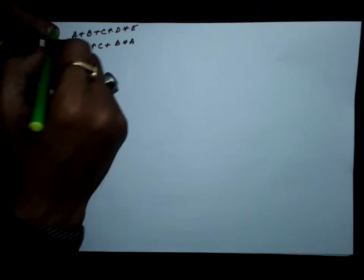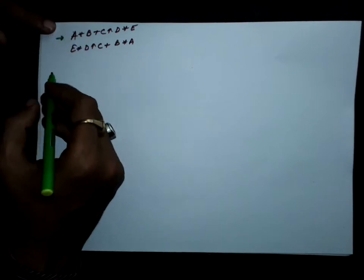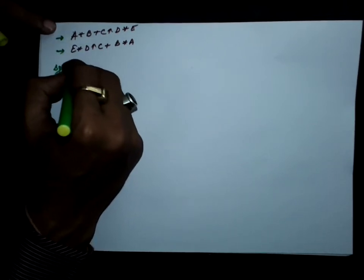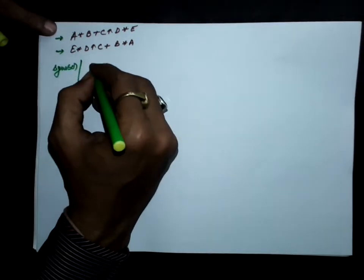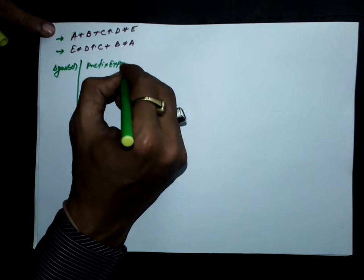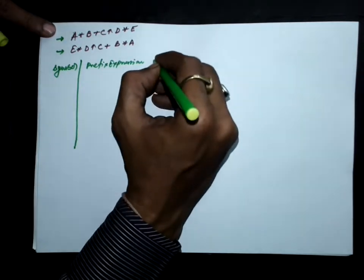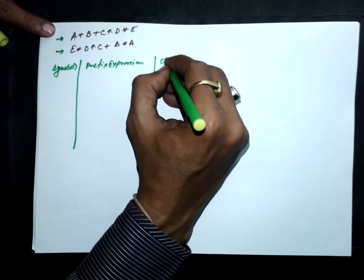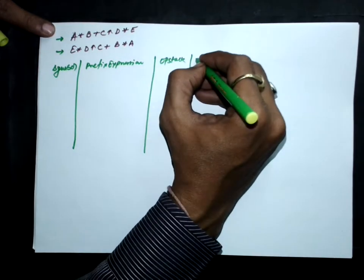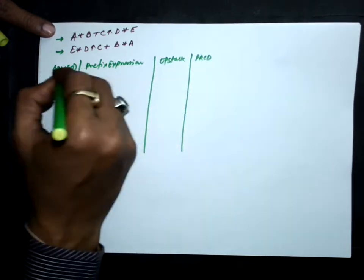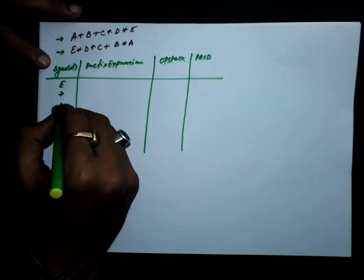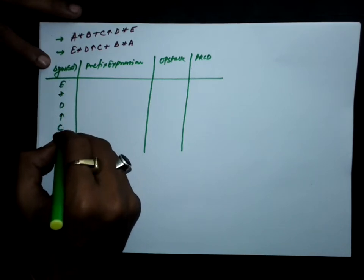Let us convert this infix expression to prefix. For this, we first reverse the expression. We will make a table with columns for the symbol, the prefix expression, the operator stack, and the precedence. The symbols we have are: e, multiplication, d, exponent, c, plus, b, multiplication, a, and dollar.